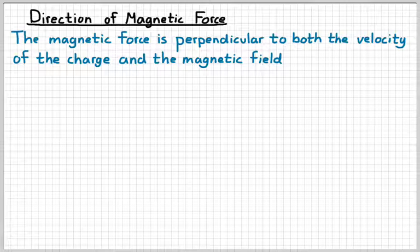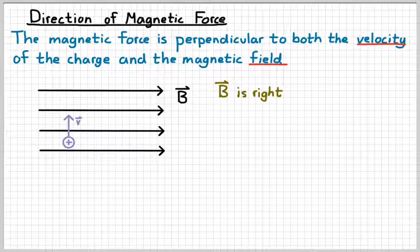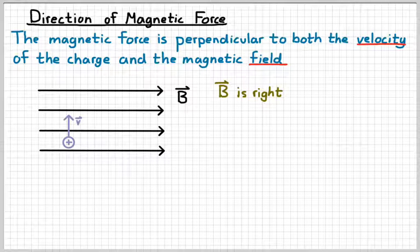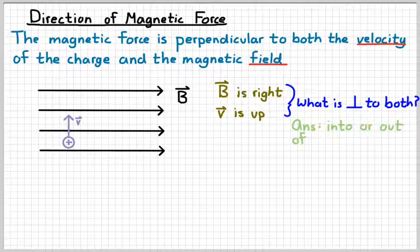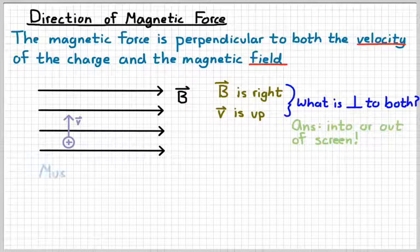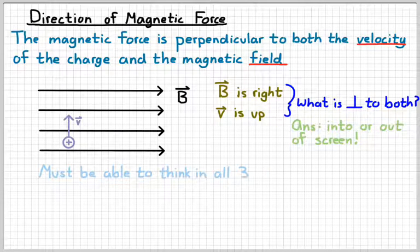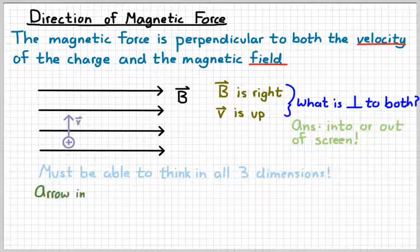So going back to our example, where we've got a charge moving upwards and a magnetic field directed to the right — magnetic field to the right, velocity upwards — the question is, what is a direction that is perpendicular to both? What's a direction that's perpendicular both to up and to right? The answer is the third dimension, either into the page or out of the page. So instead of thinking just in the x and y direction, we also need to think in the z direction. Typically when we're working on a piece of paper, the z direction is in and out of the piece of paper.